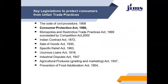There are some key legislations in place to protect consumers from unfair trade practices. These include the CPC 1908, Consumer Protection Act 1986, MRTP Act 1969 (succeeded by the Competition Act), Indian Contracts Act 1872, Sales of Goods Act 1930, Specific Relief Act 1963, Usurious Loans Act 1918, Industrial Disputes Act 1947, Agricultural Produce Grading and Marketing Act 1937, and Prevention of Food Adulteration Act 1954. Among these, the Consumer Protection Act 1986 is the most significant one.